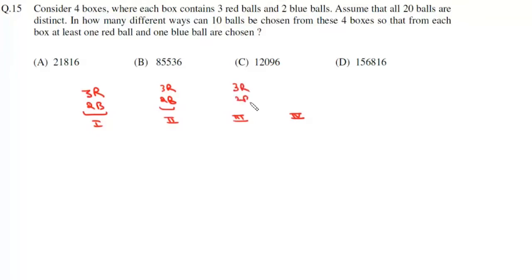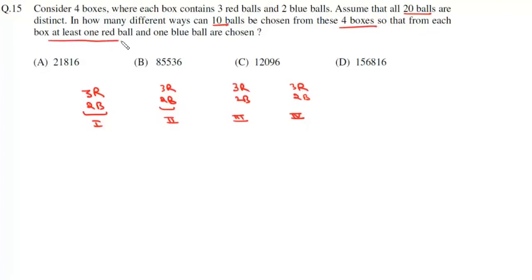So it will be 3 red, 2 blue in each box, and all 20 balls are distinct. In how many ways can 10 balls be chosen from these 4 boxes so that from each box, at least 1 red and 1 blue ball are chosen?